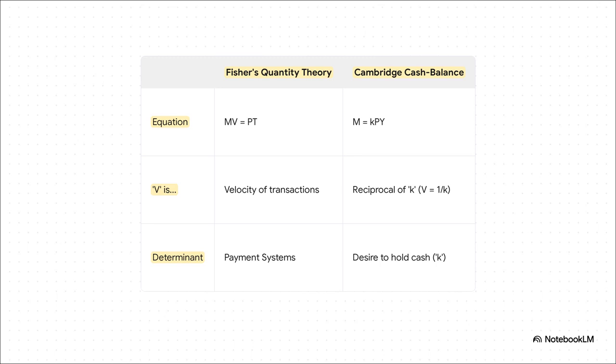See, if people get nervous and decide to hold more cash, K goes up. And if they're holding more, then logically, money has to be moving slower. So V goes down. That simple relationship, V equals 1 over K, that is the mathematical key that links these two worldviews.